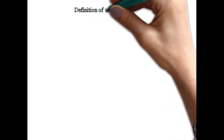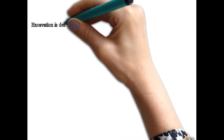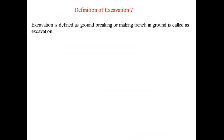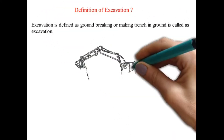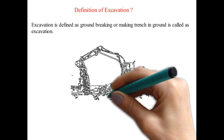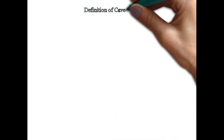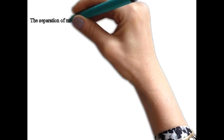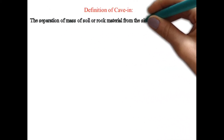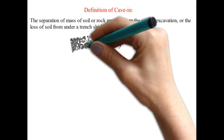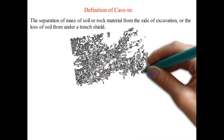Excavation procedure. Definition of excavation: excavation is defined as groundbreaking or making a trench in the ground. Definition of cave-in: the separation of a mass of soil or rock material from the side of an excavation, or the loss of soil from under a trench shield.